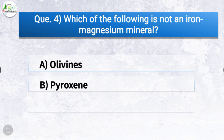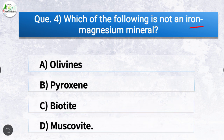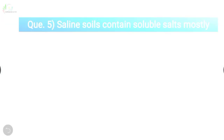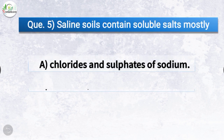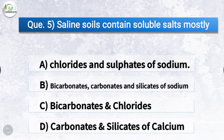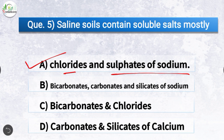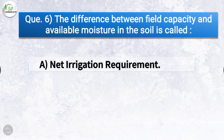Question number four: which of the following is not an iron-magnesium mineral? The correct answer is option D, muscovite. Moving on to the next question: saline soils contain soluble salts mostly. The correct answer is option A, chlorides and sulfates of sodium. Saline soils contain soluble salts mostly of chlorides and sulfates of sodium.